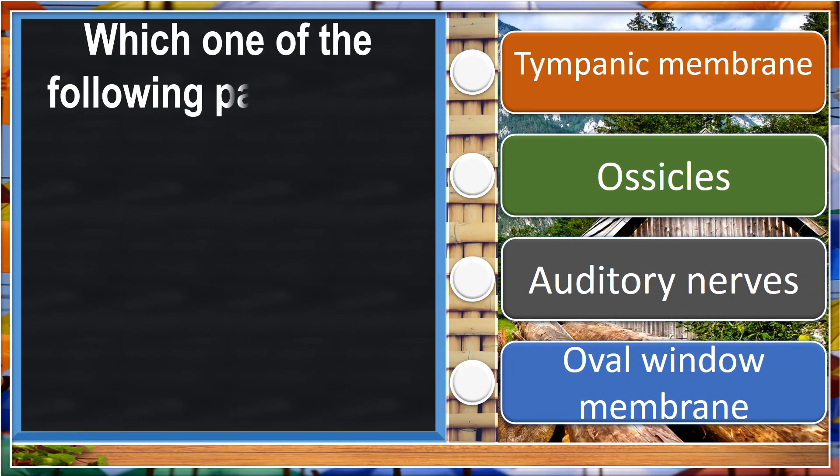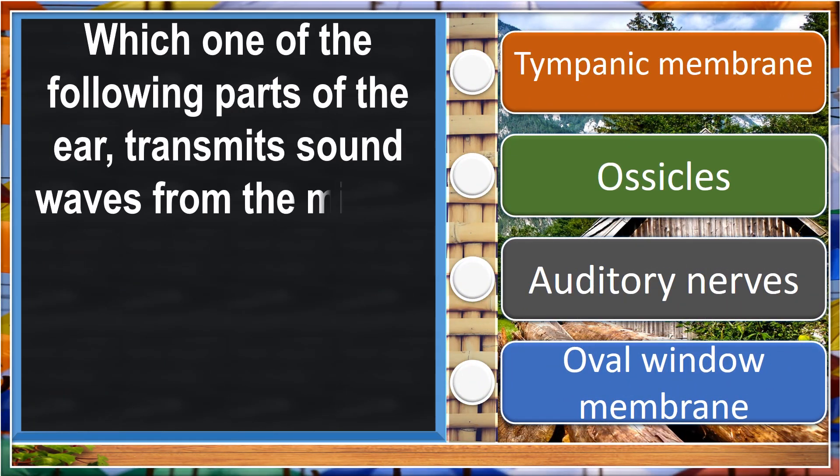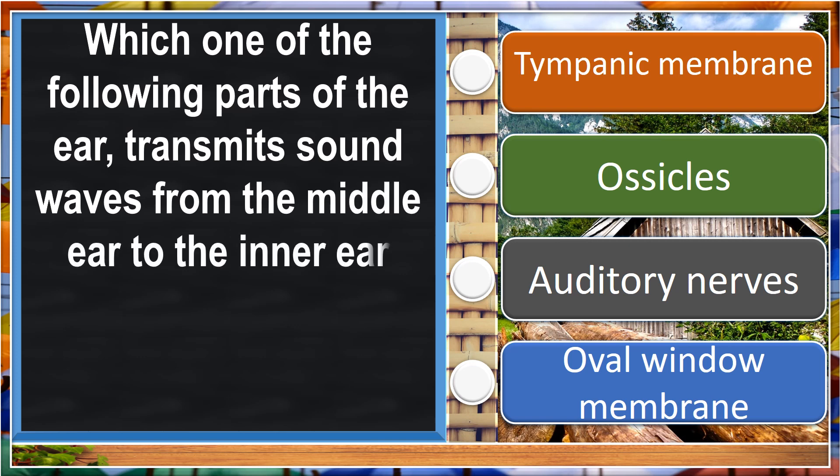Which one of the following parts of the ear transmits sound waves from the middle ear to the inner ear?